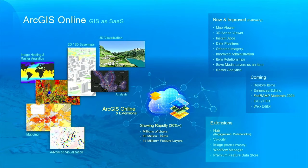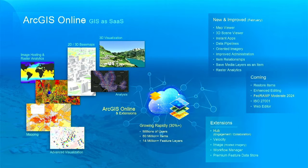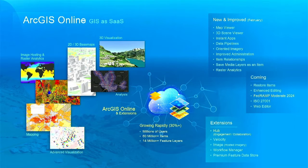ArcGIS Online underpins a lot of the work that we do, even if we're not using the application in its own right. It's a repository for the named users, for the data sets, and some of the capabilities. ArcGIS Online is a SaaS — a software as a service offering — which means that you don't have to maintain it yourselves. It's something you connect to ongoing.